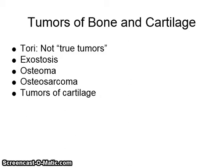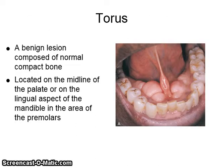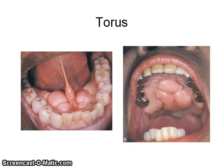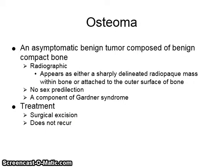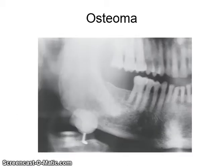Tumors of bone and cartilage are not true tumors. They include exostosis, osteoma, osteosarcoma, and tumors of cartilage. A torus is a benign lesion composed of normal, compact bone located on the midline of the palate or on the lingual aspect of the mandible in the area of the premolars. An exostosis is a small nodular excrescence of normal, compact bone. An osteoma is an asymptomatic benign tumor composed of compact bone. Radiographically, it appears as a sharply delineated radiopaque mass within bone or attached to the outer surface of bone. There is no sex predilection and it could be a component of Gardner syndrome. They are treated with surgical excision and do not reoccur.